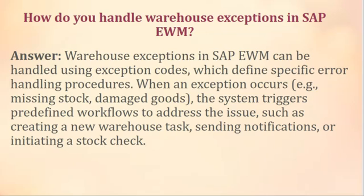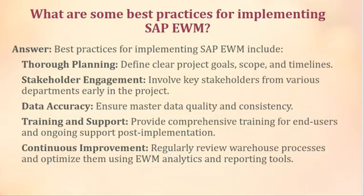How do you handle warehouse exceptions in SAP EWM? Warehouse exceptions in SAP EWM can be handled using exception codes, which define specific error-handling procedures. When an exception occurs — for example, missing stock or damaged goods — the system triggers predefined workflows to address the issue, such as creating a new warehouse task, sending notifications, or initiating a stock check.